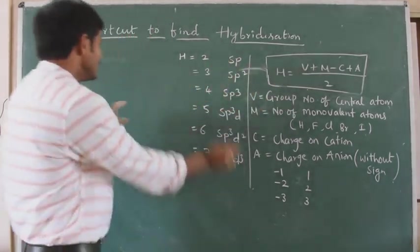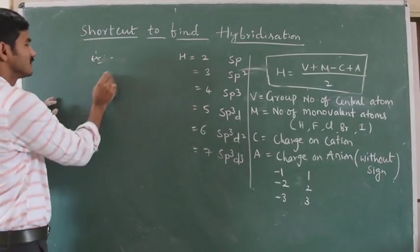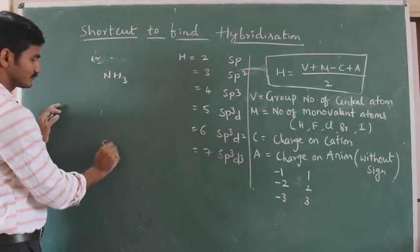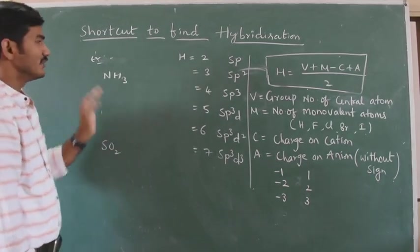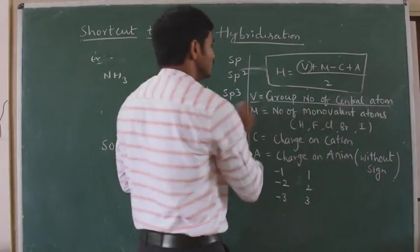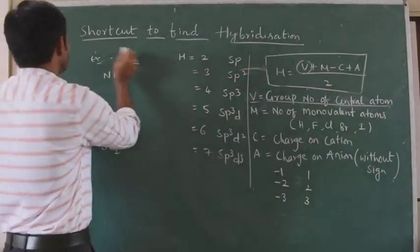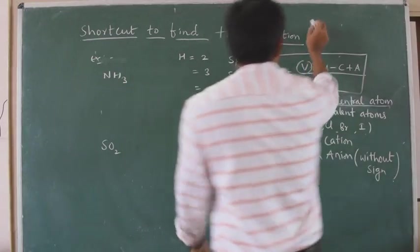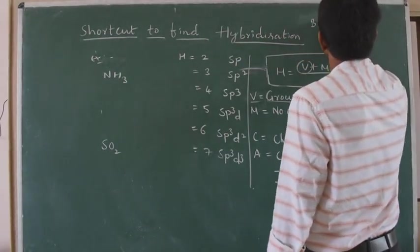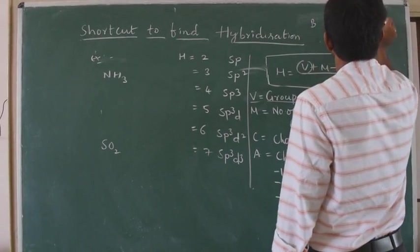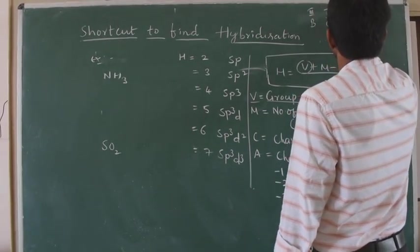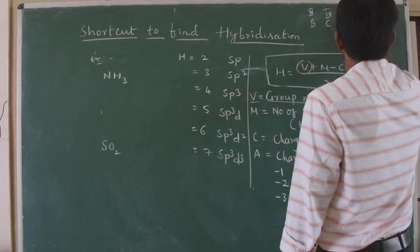Let us do some examples. I will take ammonia (NH3). We have to remember: V is the group number of the central atom. You all have to know some elements: Boron is group 3, Carbon is group 4, Nitrogen is group 5, Oxygen is group 6, Fluorine is group 7. Similarly, Aluminium, Silicon, Phosphorus, Sulfur, Chlorine, Bromine follow the same groups.